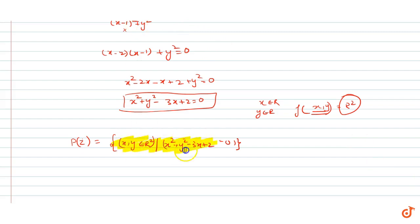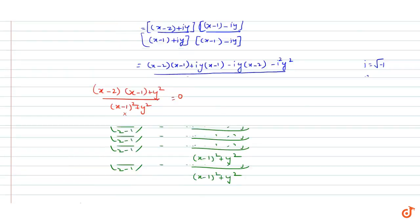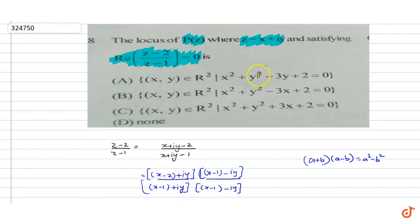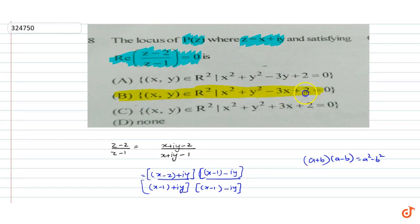Looking at the options, x² + y² - 3x + 2 = 0 corresponds to option B. So option B is our correct answer. This is our complete solution.